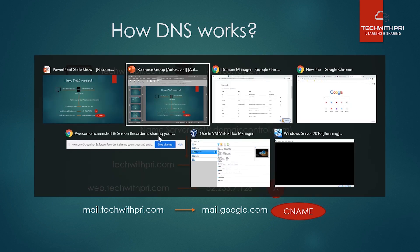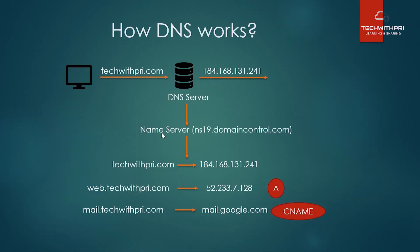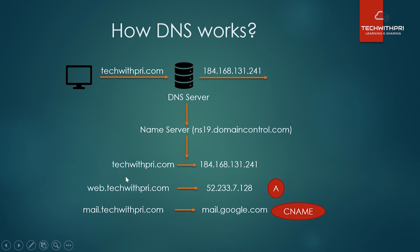In the DNS management section you can see the NS record — the name server record: ns19.domaincontrol.com and ns20.domaincontrol.com. The name server is the place where all the information is stored — the domain name and their respective IP addresses. When someone searches techwithpre.com, it goes to the GoDaddy name server, which has the IP address listed as 184.168.131.241.